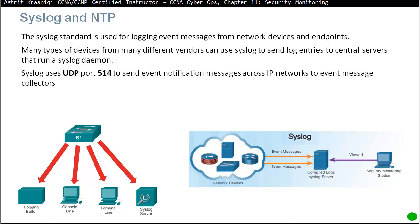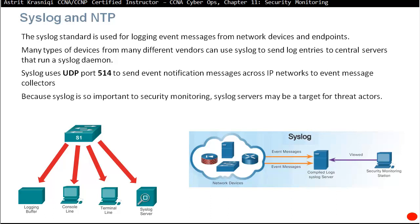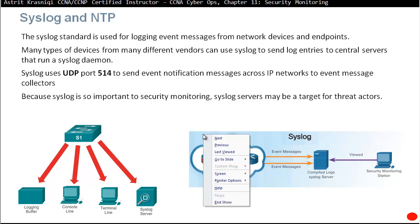You can install a syslog application on pretty much any device — even a tablet. By default, Cisco syslog messages are sent to the console line. For example, when you enable an interface or create a loopback interface, the message that appears — 'line is up, protocol is up' — that is a syslog message. We can enable syslog messages to be buffered to RAM, sent to a terminal line, or to a syslog server. Because syslog is so important in security monitoring, syslog servers may be targets for threat actors.